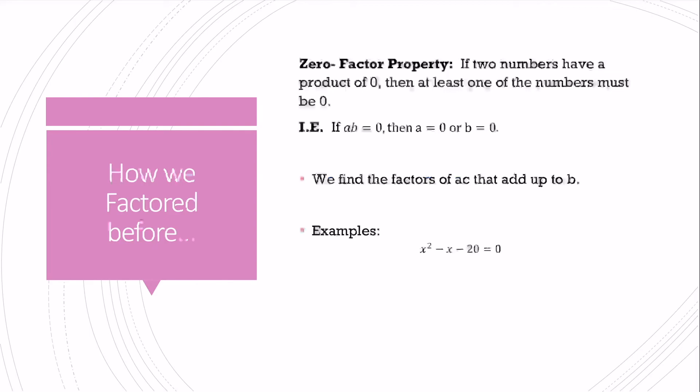We had used the zero factor property to solve equations of this form. If I have two numbers and their product is zero, then either one or the other has to be zero. The way we learned to factor last chapter was to find the factors of ac that add up to b. That's still what we're doing right now, but we're going to learn two new methods as this chapter goes on.